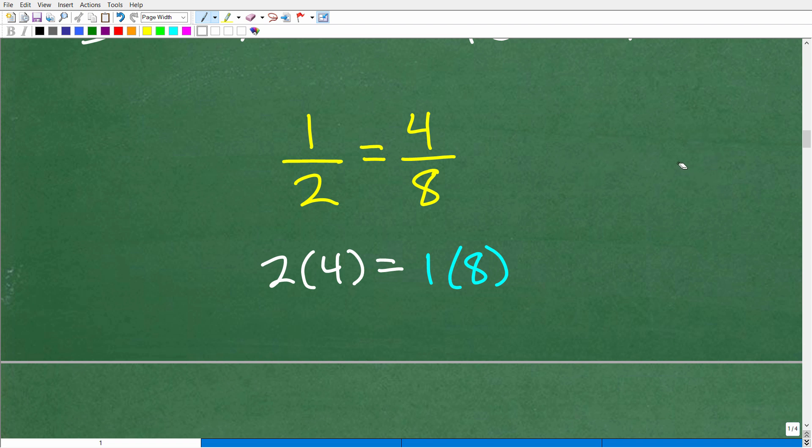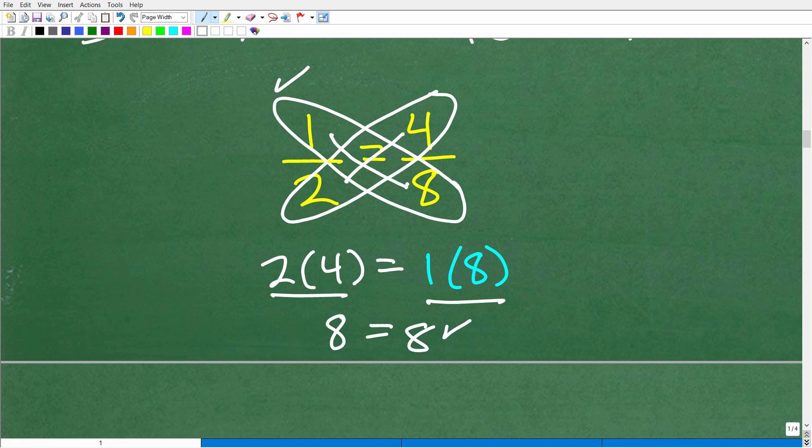And when you have a proportion, what holds true is something called the cross product. So in other words, when we cross multiply, the cross products are equal in a proportion. So let's take a look at this. 1 times 8 is what? Well, that's going to be 1 times 8. That's going to be equal to 2 times 4. So 2 times 4 is what? 8. 1 times 8 is 8. So when you have a proportion, the cross products are equal.